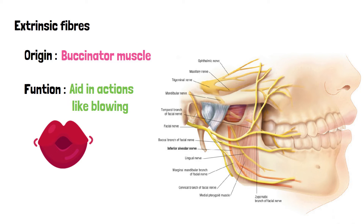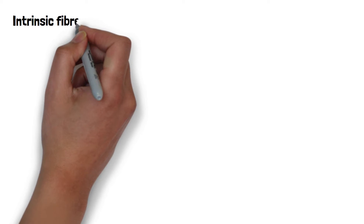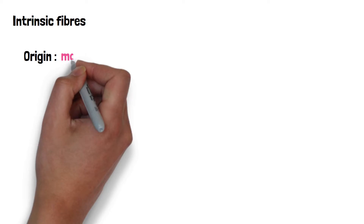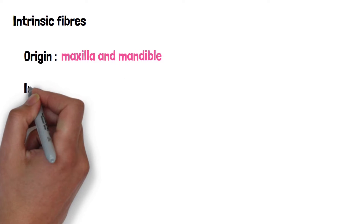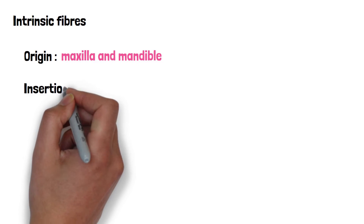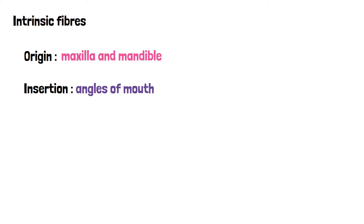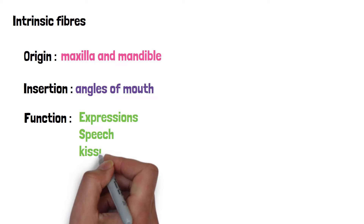Extrinsic fibers are innervated by the buccal branch of the facial nerve. The intrinsic fibers, on the other hand, originate from the medial part of the maxilla and mandible and are inserted at the angles of the mouth. These internal fibers form the bulk of the lips, enabling lip movements for expressions, speech and functions like kissing.